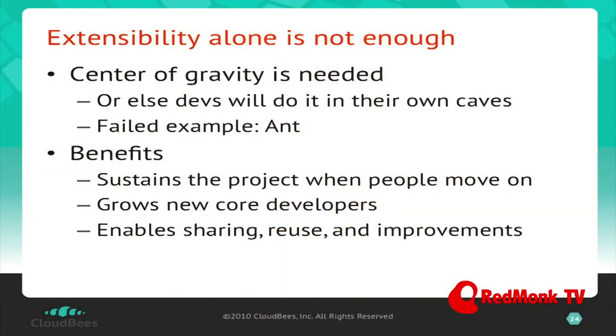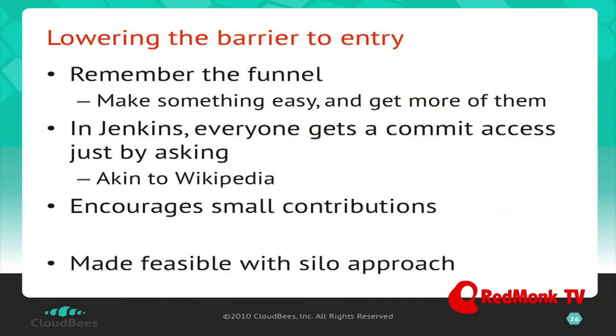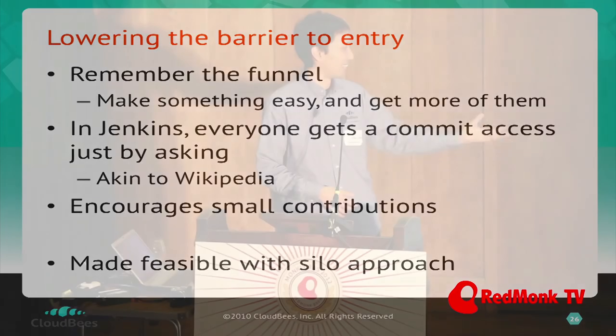Extensibility alone is not enough — you need some kind of center of gravity for the community to work as a community, because otherwise everyone will do it in their own separate places. PHP extensions are a good example — there are a lot of them, but they're done all over the place with no coherent community that creates sustainability when people move on. That's what makes Jenkins unique: we have that center of gravity. To lower the barrier to entry, in Jenkins we allow everyone to have commit access just by asking — and that's only possible because we have the silo approach of plugins, so whatever programmer we get is isolated to a small portion of the code.